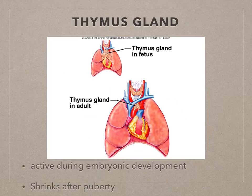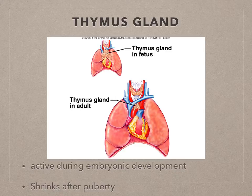What is the thymus gland? You find the thymus gland in the chest below the sternum. It begins to function during embryonic development and is most active around and after birth. It then begins to shrink, and after puberty it is very small or absent, as the T cells have matured.